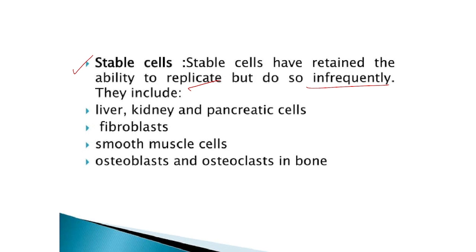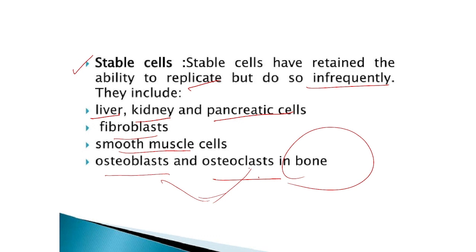Stable cells have the ability to retain the ability to replicate, but do so infrequently. In which organs can we see stable cells? In liver, kidney, pancreatic cells, fibroblast, smooth muscle cells, osteoblast, and osteoclast. Osteoblast and osteoclast are the two types of cells in bone — osteocytes, osteoblast, osteoclast. Fibroblast we studied in connective tissue. These cells — liver, kidney, pancreatic cells — are not dividing continuously. If needed, they will multiply for a short time, then stop. That type of cell is called stable cells.